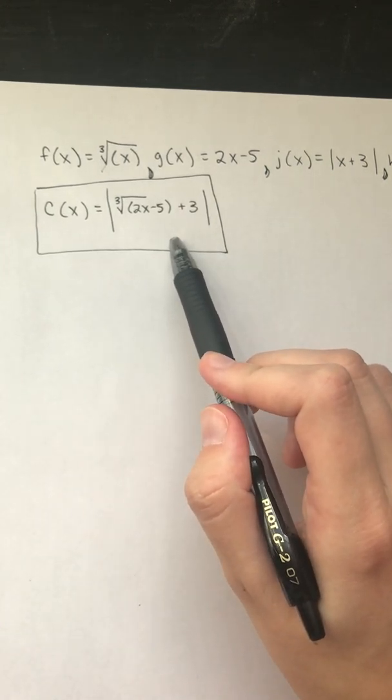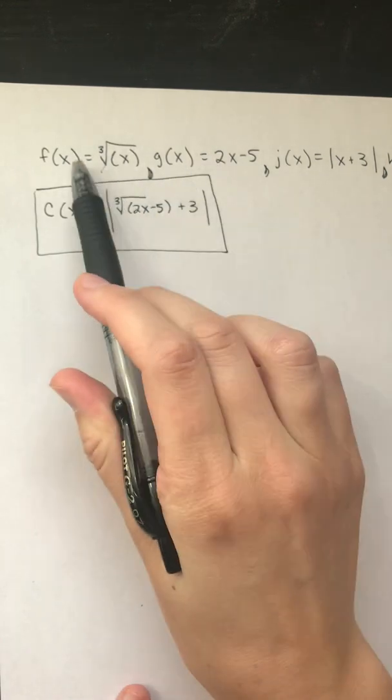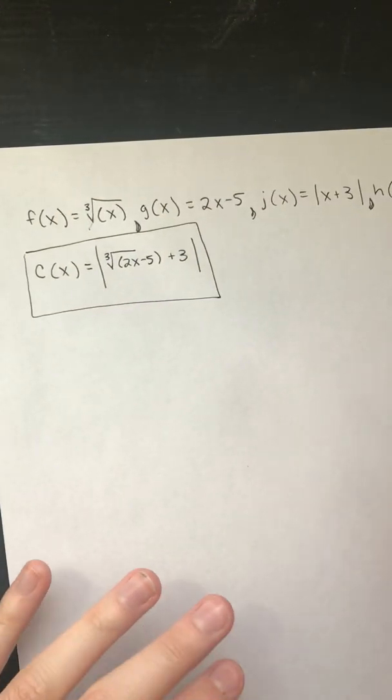So the way I would approach this is I would say what inside this function looks like something out here and I'd kind of go through it that way. So let's show you my thought process.